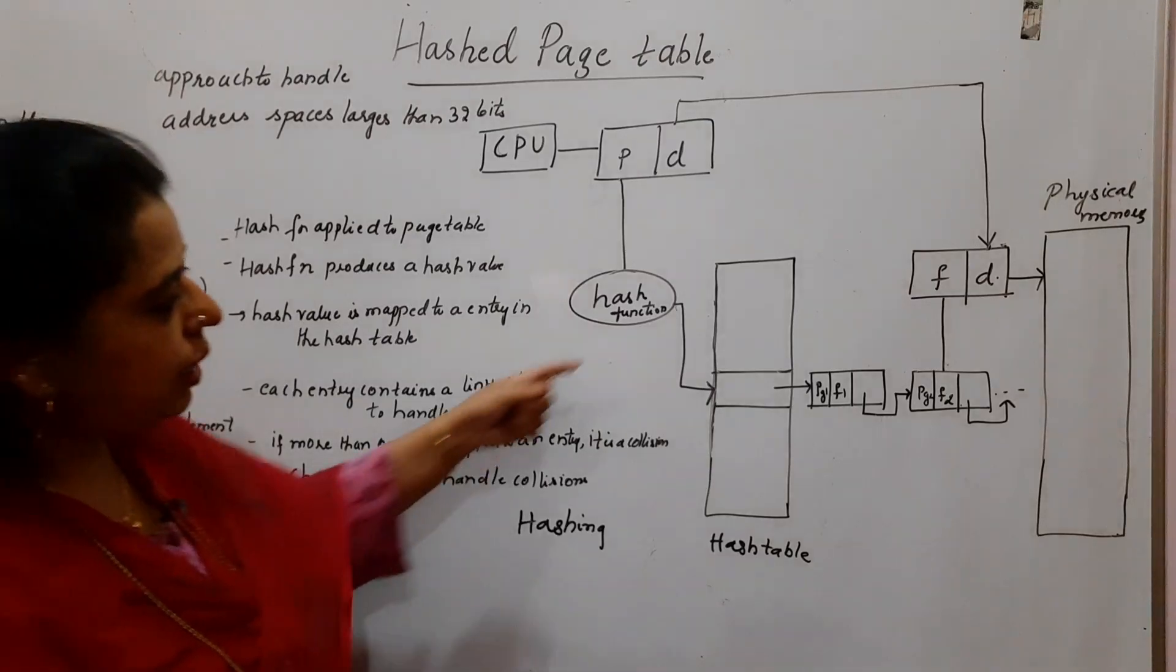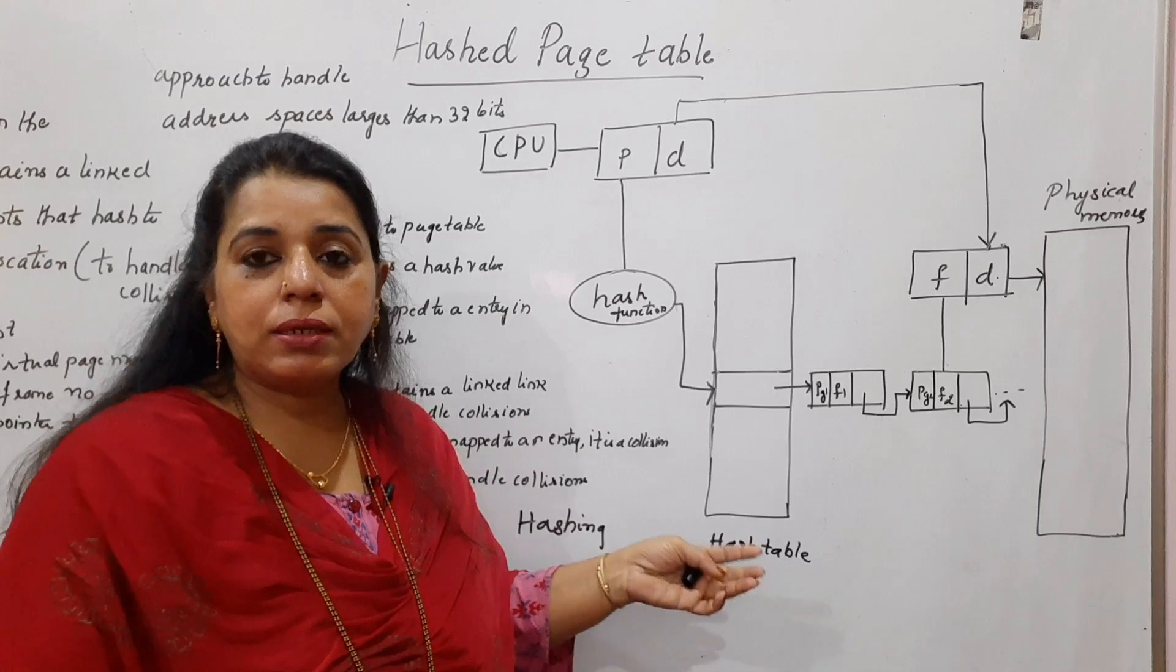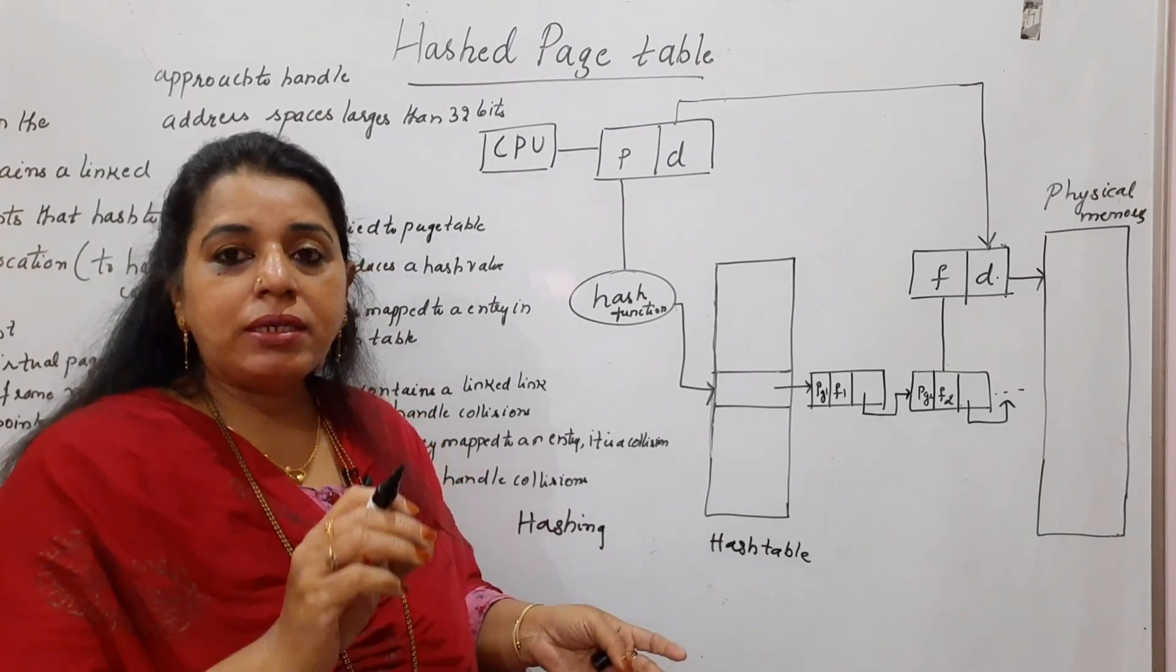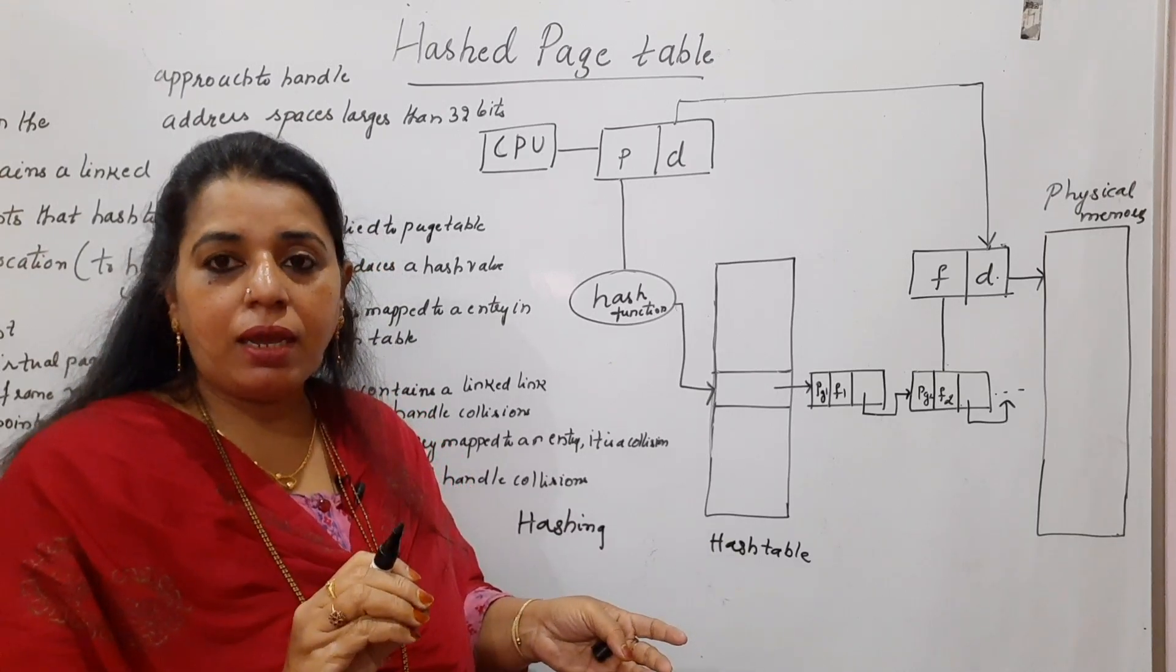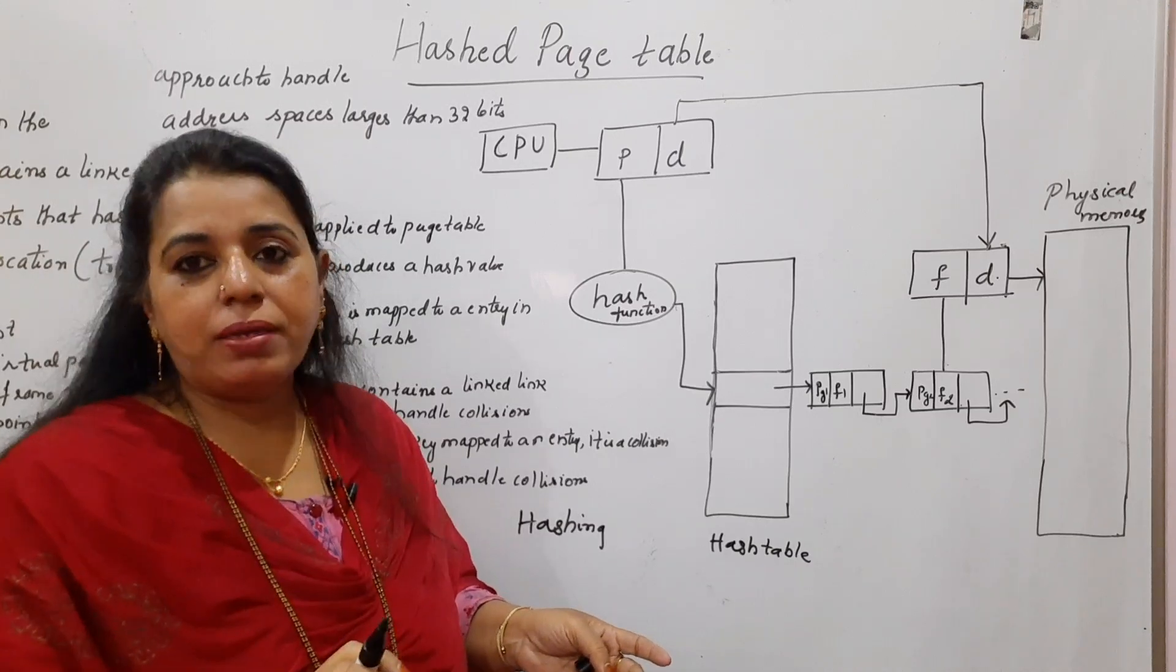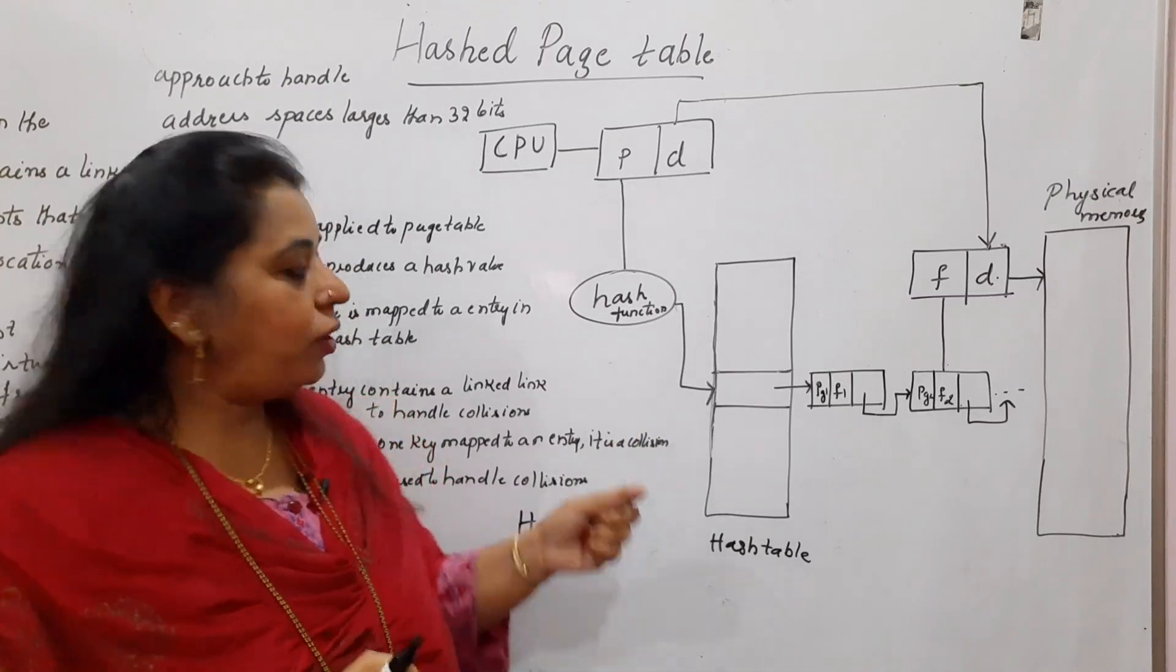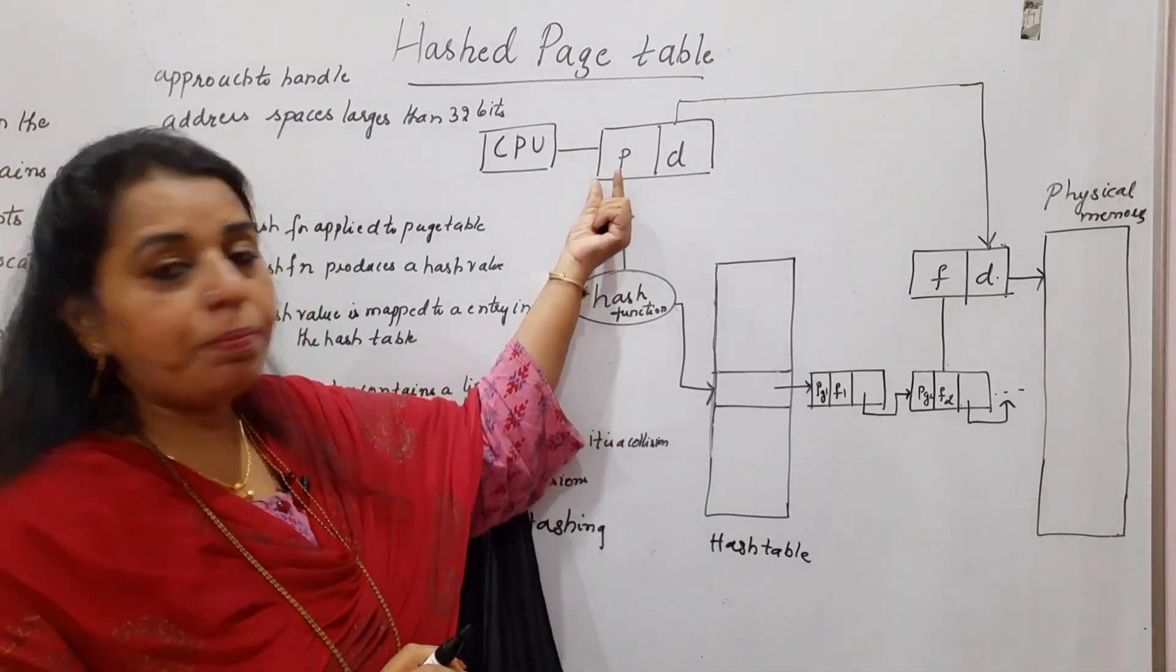Hashing technique searches a particular entry in the table very fast compared to linear search and binary search. Hashing is a searching technique which is going to search an element in just one comparison. So since it is very fast, you can go for this particular hashing technique. But for that, you have to apply the hashing function on the page number.